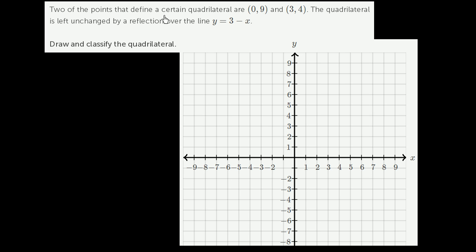Two of the points that define a certain quadrilateral are (0,9) and (3,4). The quadrilateral is left unchanged by a reflection over the line y is equal to 3 minus x.